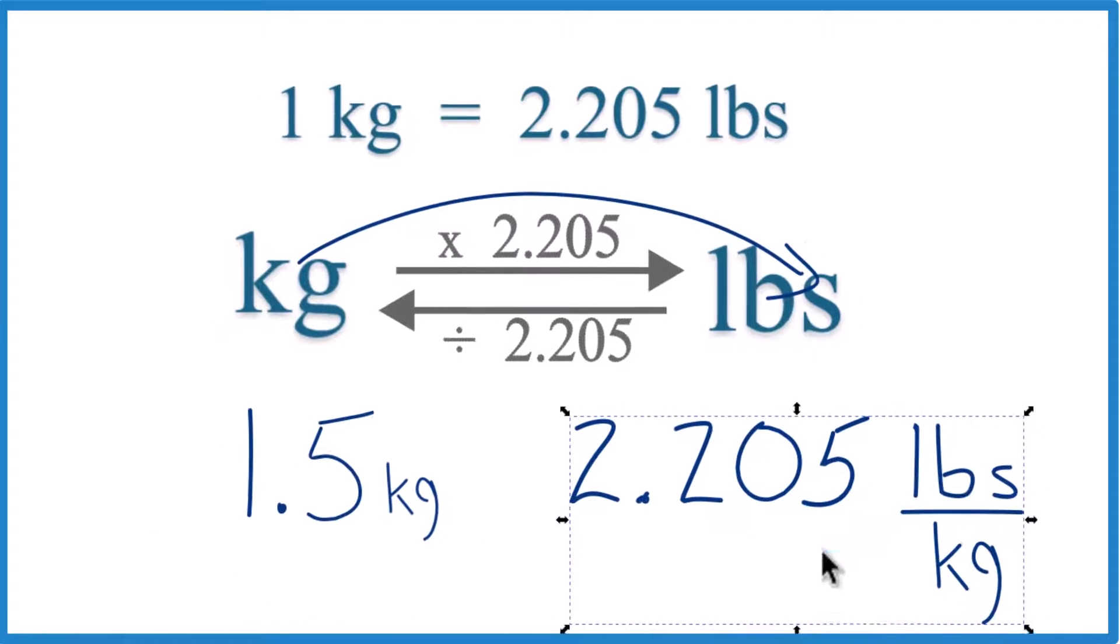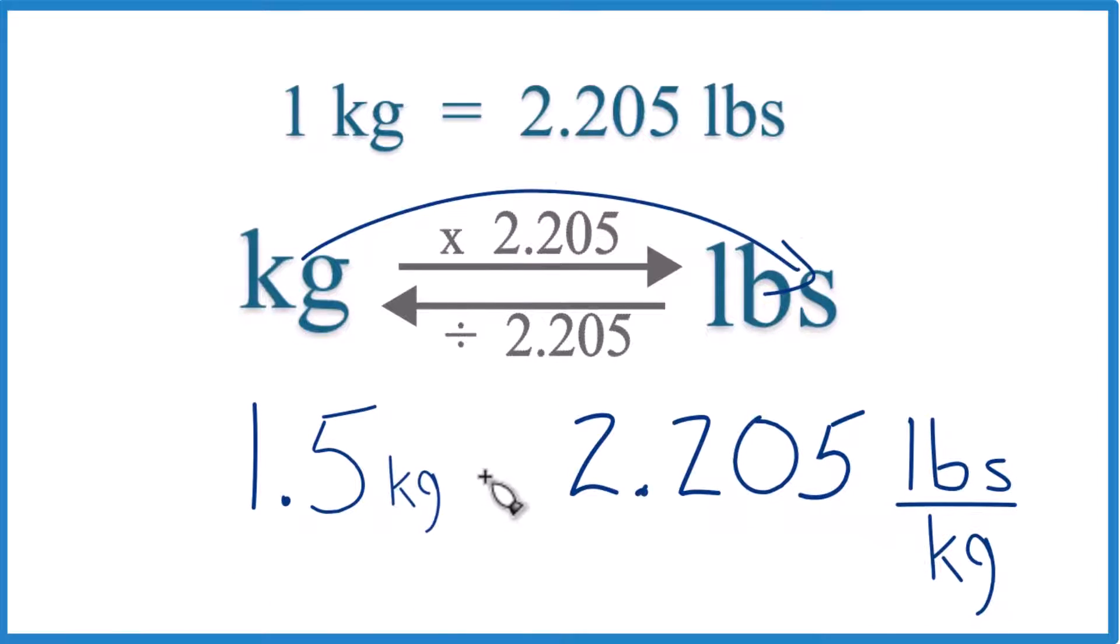So here's our 2.205 we're going to multiply. And you can see when we multiply, we have 2.205 pounds per kilogram, and that comes from the conversion factor. 1 kilogram equals 2.205 pounds. But now when we multiply, kilograms on the top and bottom, they cancel out. We're left with pounds. That's what we're looking for.